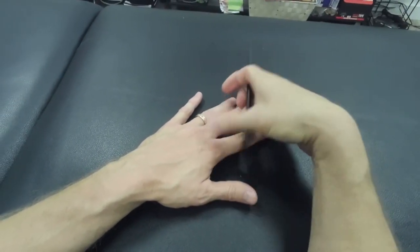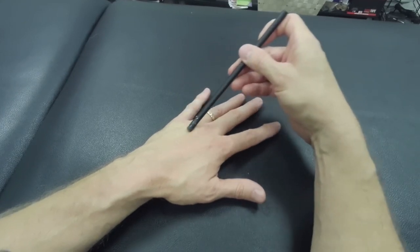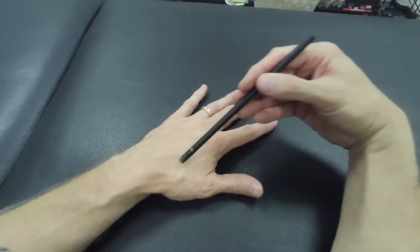Okay, what you want to do is take the end of the pencil eraser and put it in between right here on the back of the hand, in between each one of those tendons.